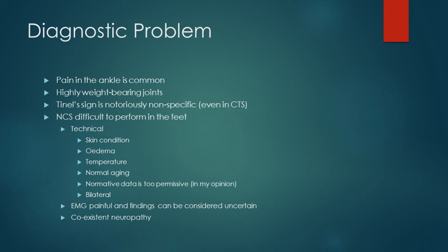Normative data is too permissive in my opinion, and it can be very difficult to make this diagnosis when symptoms are bilateral. EMG itself is painful in the feet and findings can be considered uncertain, as chronic denervation is often encountered. Another difficulty is the presence of co-existent neuropathy, and it becomes impossible to make the diagnosis accurately in that situation.